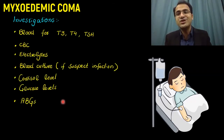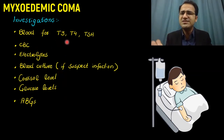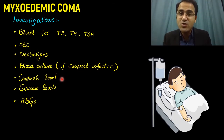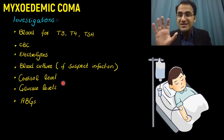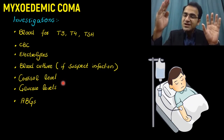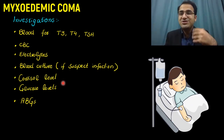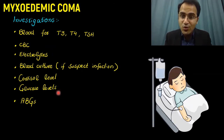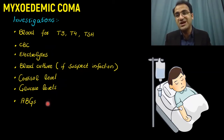What investigations do you need in a patient presenting with myxedema coma? Take blood to check T3, T4, and TSH levels, which will be low. Do a CBC to look for infection, get electrolytes, and blood cultures if you suspect infection. Get cortisol levels, since hypothyroidism can be associated with hypopituitarism causing low cortisol. Also check glucose levels and ABGs to assess acidotic status.